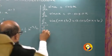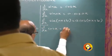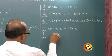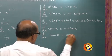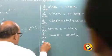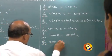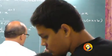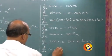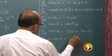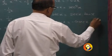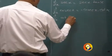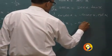d by dx of cos x is minus sin x. d by dx of tan x is sec square x. d by dx of sec x is sec x tan x. d by dx of cosec x is minus cosec x cot x. d by dx of cot x is minus cosec square x.